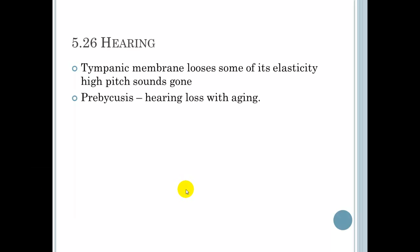5.26 hearing. Tympanic membrane loses some of its elasticity, and this pretty much means that those high-pitched sounds are pretty much gone. So if you have a Bose sound system that really throws a lot of high-pitched sounds in there, the 80, 90-year-old populace, even 70-year-old populace may not be able to enjoy those because the tympanic membrane has lost its elasticity, and the sound quality, they're just not hearing it at that point. Presbycusis is hearing loss with aging.